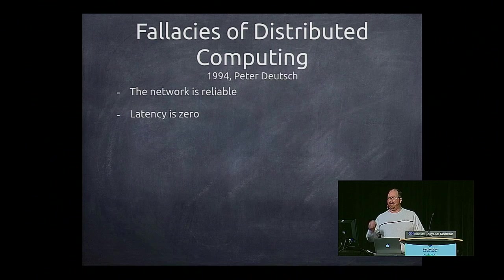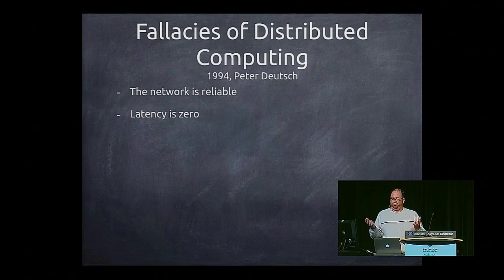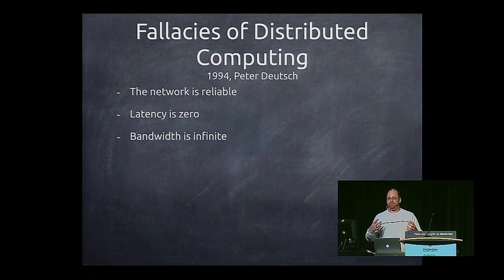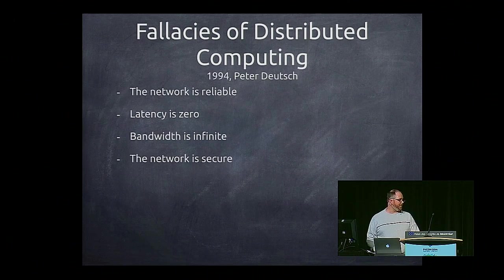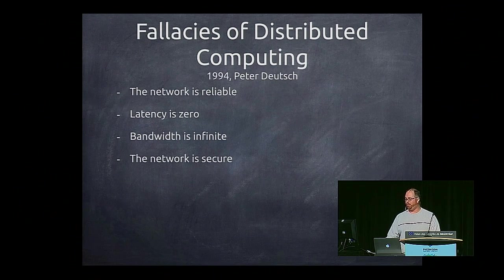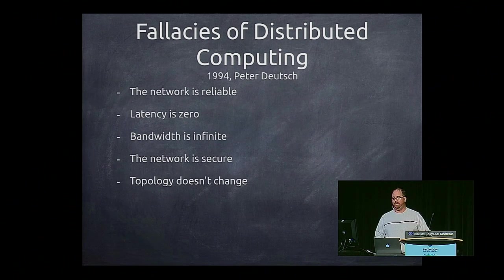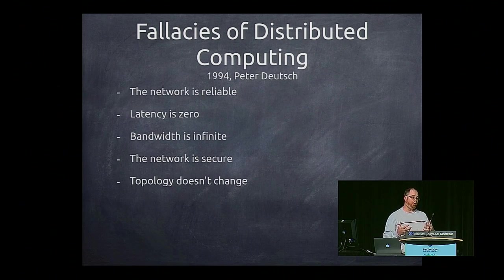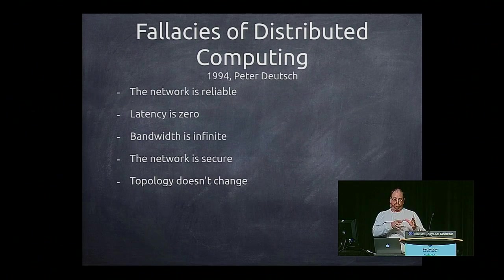That latency is zero — I can communicate between two computers instantaneously. So what if one is in Asia and one is in America? Bandwidth is infinite — let's take a one gigabyte file and shove it over the pipes, because it will happen instantaneously. The network is secure — no one can hack into our system. The topology doesn't change — we're not going to have any changing environment, different computers, or different switches, or different groups of computers that interact differently.